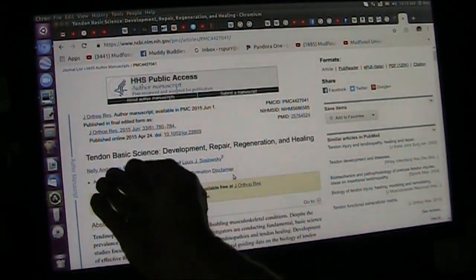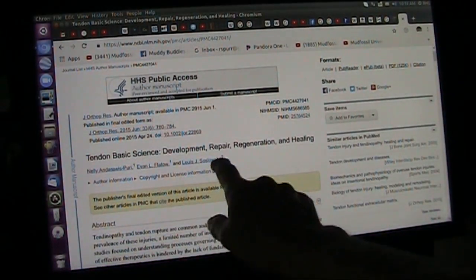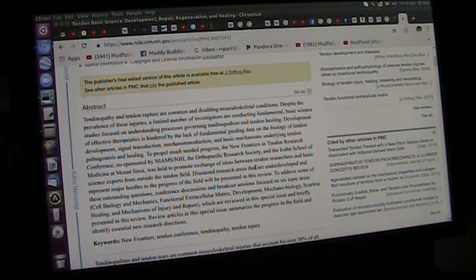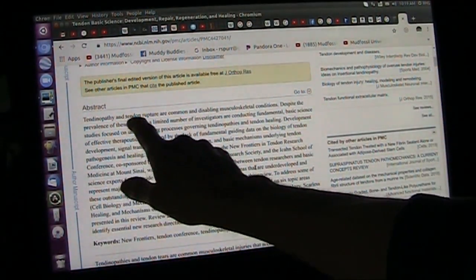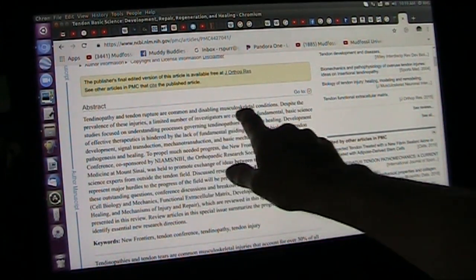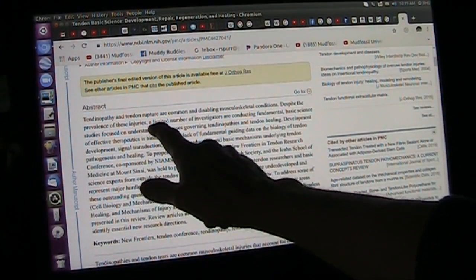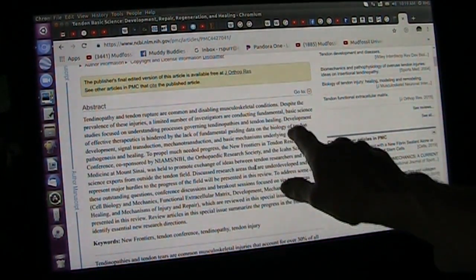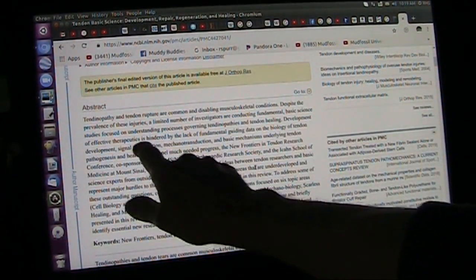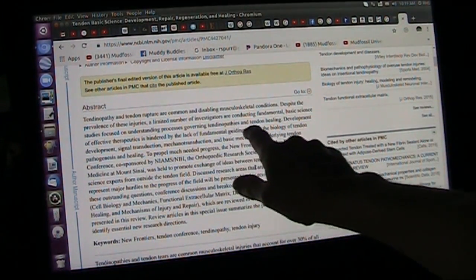This is about tendons. Tendons is basic science: development, repair, regeneration, healing. Guess what? We don't know. It says here tendon rupture are common disabling muscular conditions. Despite the prevalence of these injuries, only a limited number of investigators conducting fundamental basic science focus on understanding these processes.